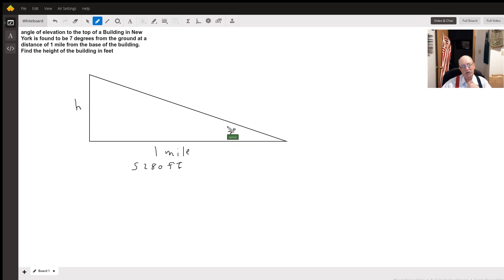Here's our angle we're looking at. H would be the opposite side. This 5,280 feet would be the adjacent side. That tells us we have to use tangent.